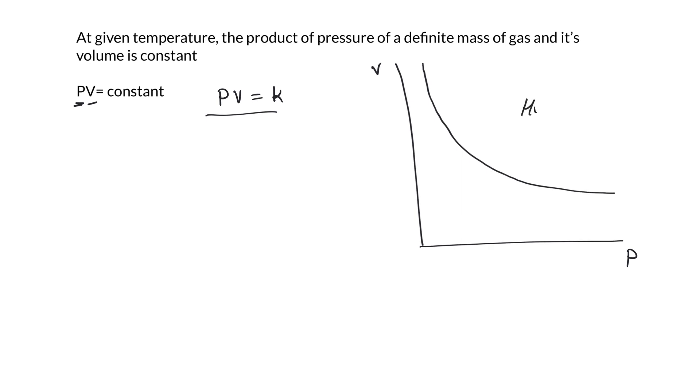This particular shape of graph is called a hyperbola. Since PV is equal to k, which is a constant, we can say if the initial P1V1 represents the initial state of the gas, then P2V2 must represent the final state of the gas. If you change the pressure, the volume will change according to this equation.